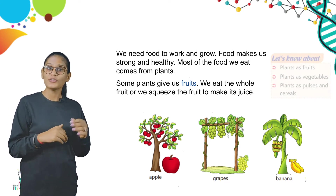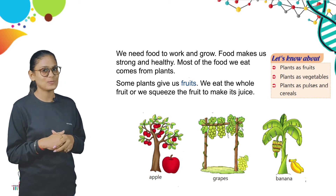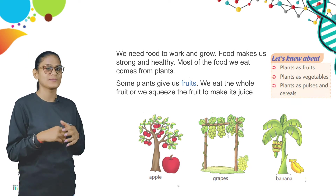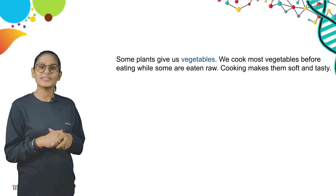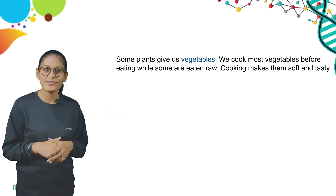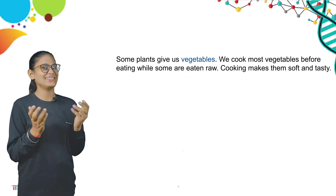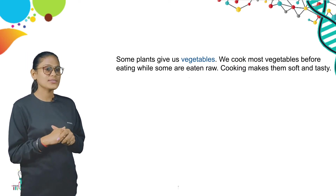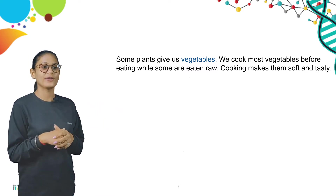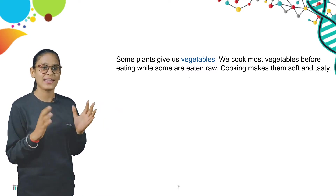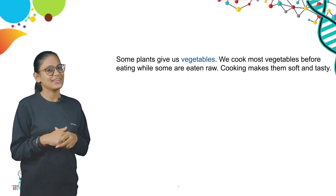Now let us know about plants as fruits, plants as vegetables, and plants as pulses and cereals. Some plants give us vegetables. We cook most vegetables before eating, while some are eaten raw. Cooking makes them soft and tasty. When you boil the potato and fill it in parathas, you get aloo paratha — that's how cooking makes food tasty.